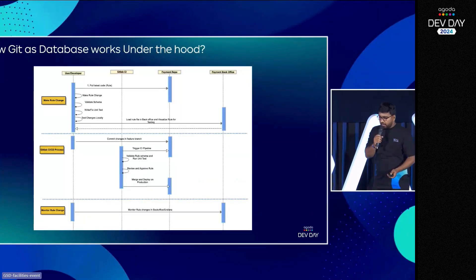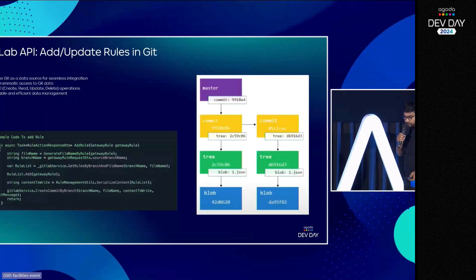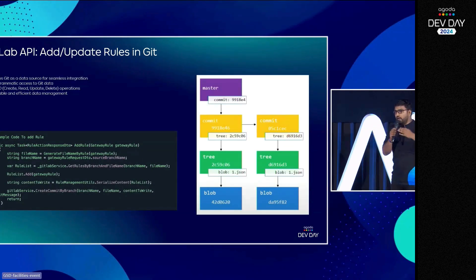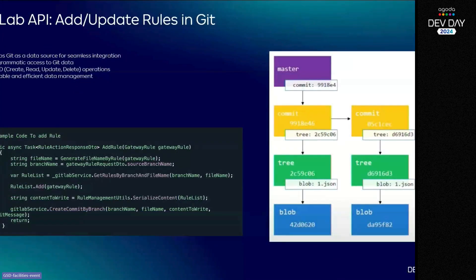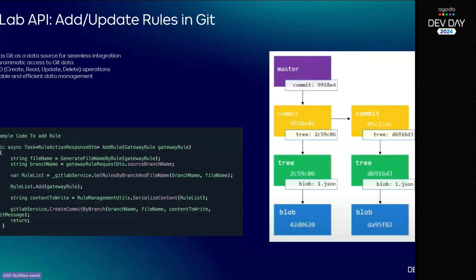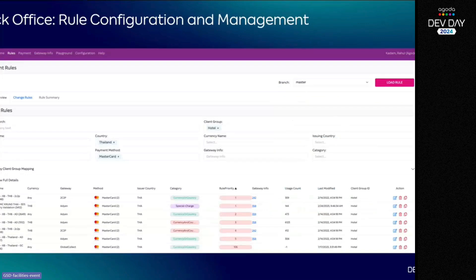Under the hood, imagine you want to edit one file — add one rule for hotel. We came up with logical mapping in our system: once you create a rule with a rule ID and payment method, we create a file name based on that, pull that file first, add the rule inside it, and then commit that file — not to the master branch, but to a new branch that gets created. I'll show this in the demo.